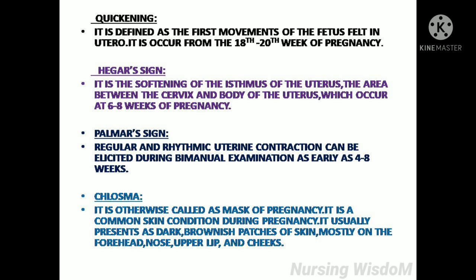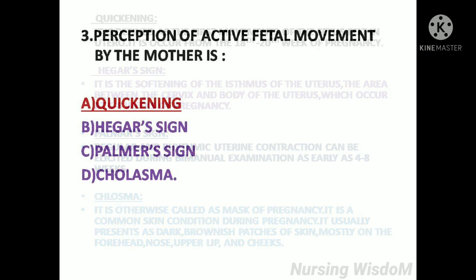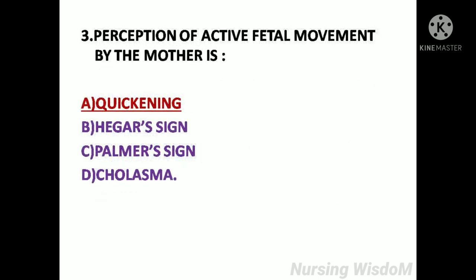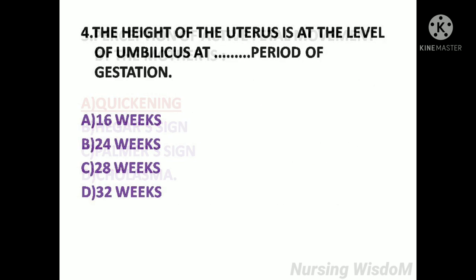Chloasma, otherwise called the mask of pregnancy, is a common skin condition during pregnancy. It usually presents as dark brownish patches on the forehead, nose, upper lip, and cheeks. So here the answer is Option A: Quickening.